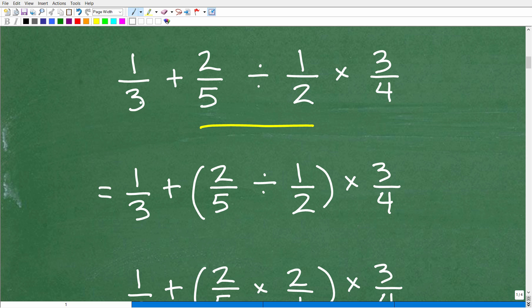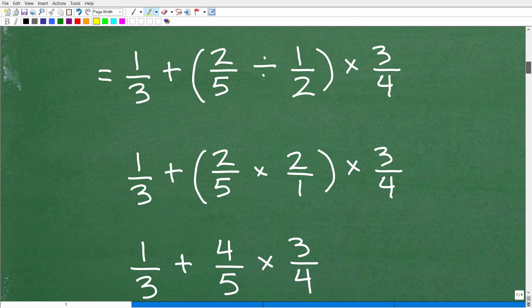So now that I know the order of operations, I have 1/3 + 2/5 ÷ 1/2. You can see I need to do this first. This part of the problem first. That's division. It's coming before multiplication. So I'm going to put that in parentheses.